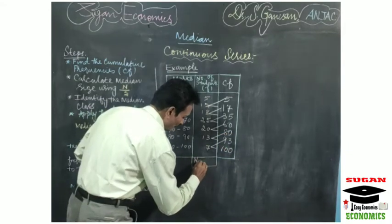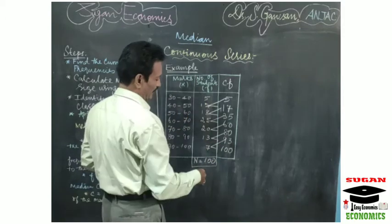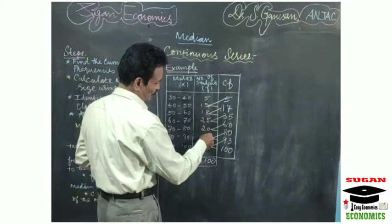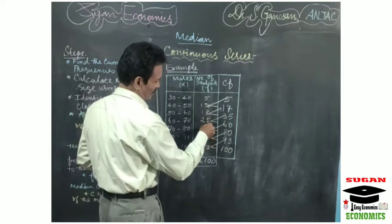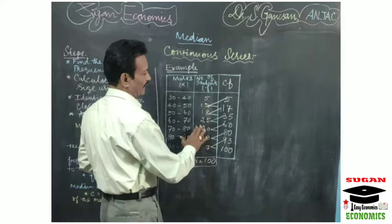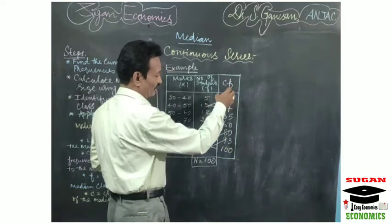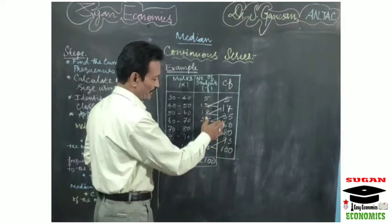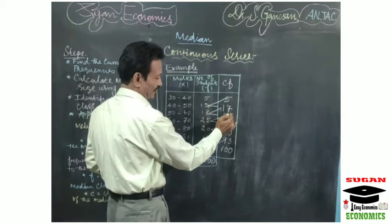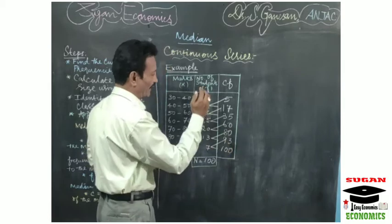N equals 100 — you can verify this. So the cumulative frequencies are 5, 17, 35, 60, 80, 93, and 100.